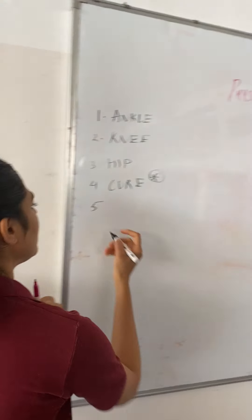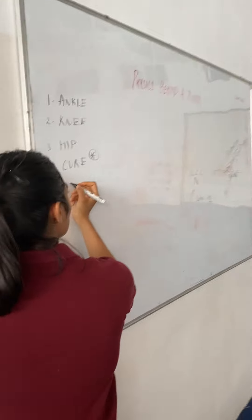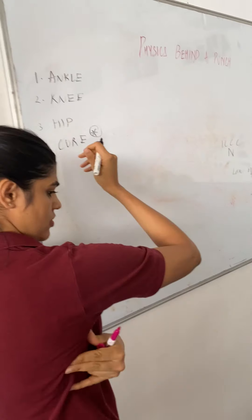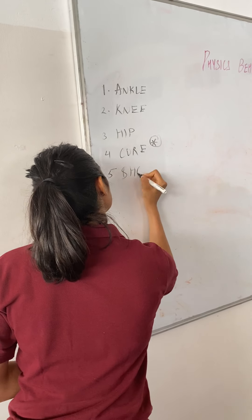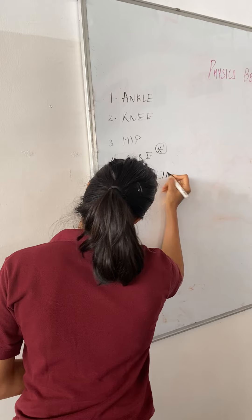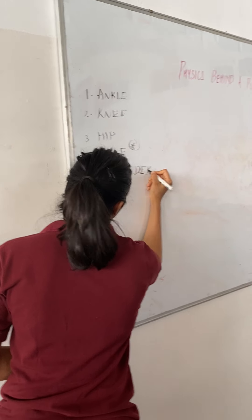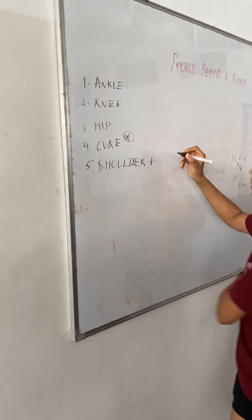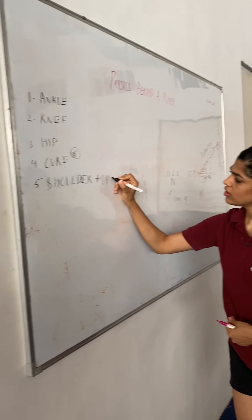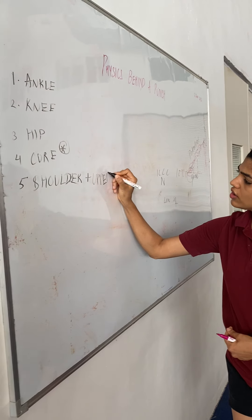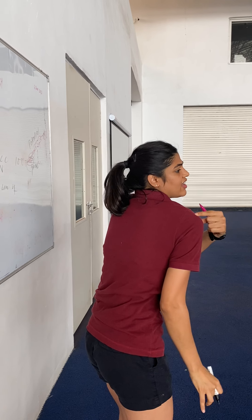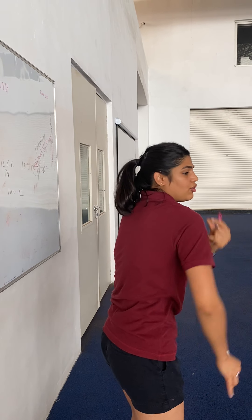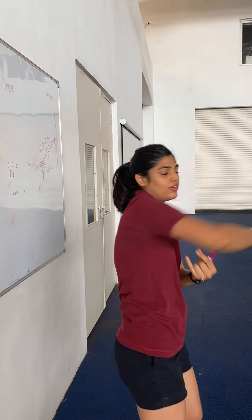First will be the ankle, second will be the knee, third will be your hip, fourth will be your core which is very important, fifth will be your shoulder — plus your upper back, because it's all of this. It's not the shoulder starting from the joint alone; it's the upper back and your shoulder together.